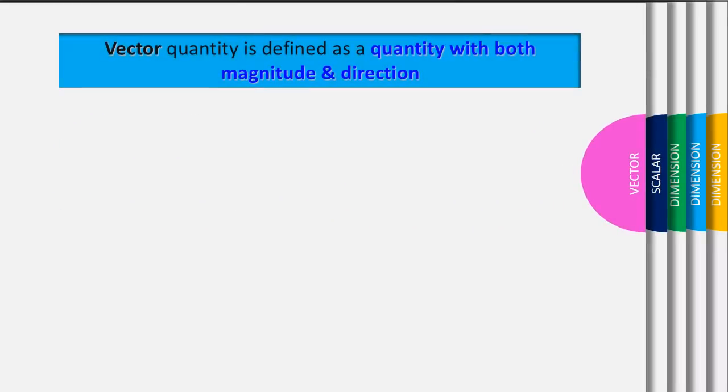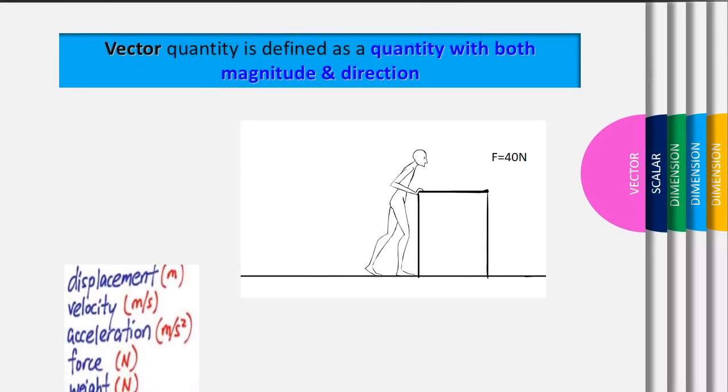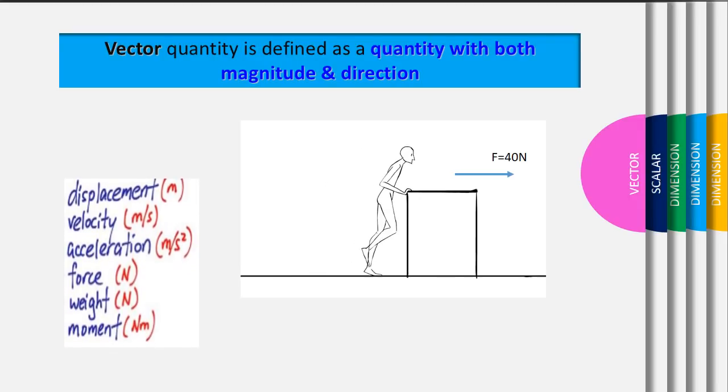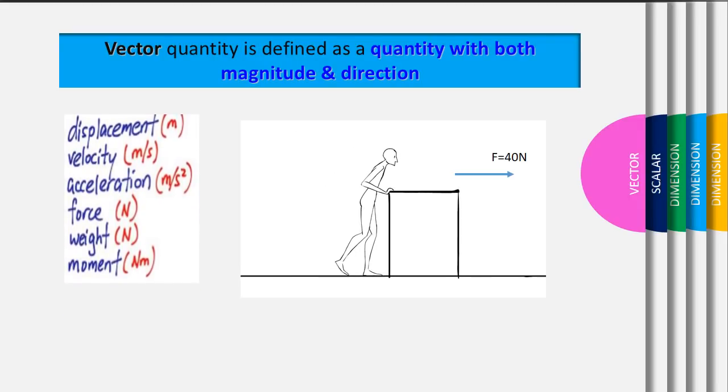Next, vector quantity. Vector quantity is defined as a quantity with both magnitude and direction.